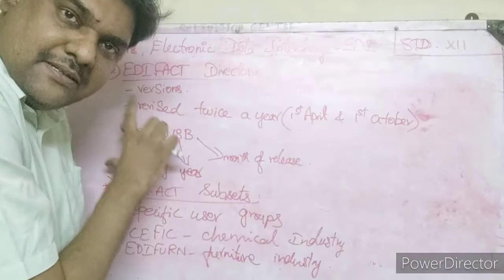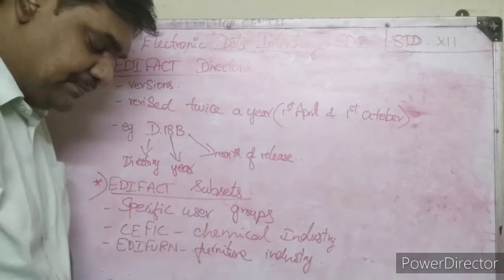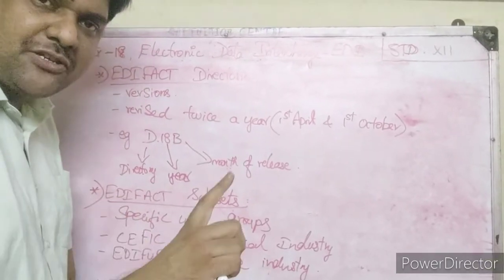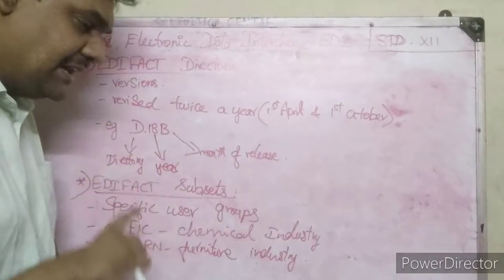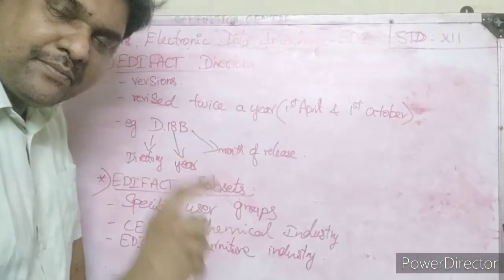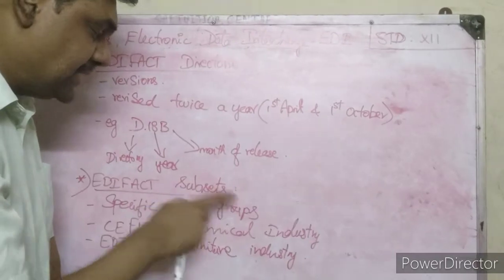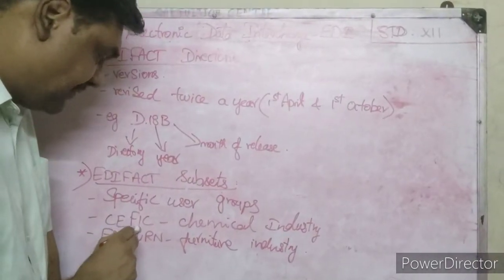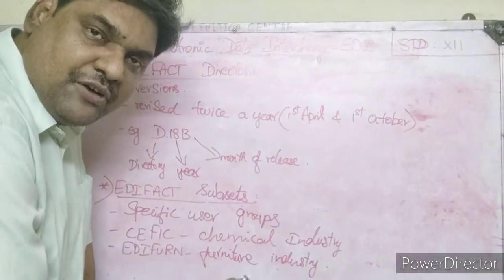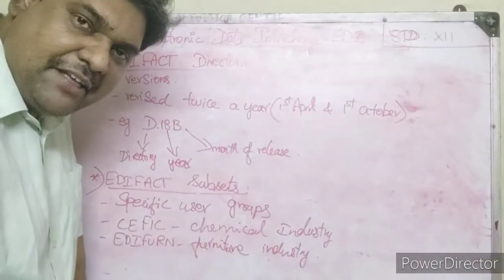This is a very important three-marks question. Next: EDI Subset. An EDI subset is created from a cross-industry standard like EDIFACT for specific user groups. Each industry has a different subset. For example, CEFIC is a subset for the chemical industry, and EDIFURN is a subset for the furniture and curriculum industry. That covers EDI directories and EDI subsets.